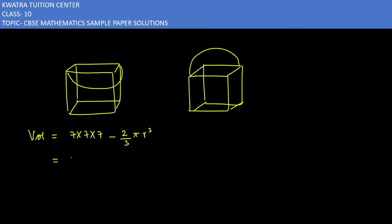So 7×7×7 is 343 minus 2/3 into π. Pi value is 22/7. And r is 7/2. Because it will cancel. So 2 and 22 can be cancelled, 11 will remain. And 7 and 7 can be cancelled. What is your value? 343 minus 11 into 49 divided by 6. So it is 539 divided by 6.